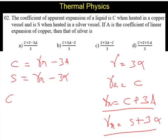Subtracting these two equations, C minus S is going to be equal to 3 alpha minus 3A. So 3 alpha, if you want to calculate, it is equal to C minus S plus 3A.